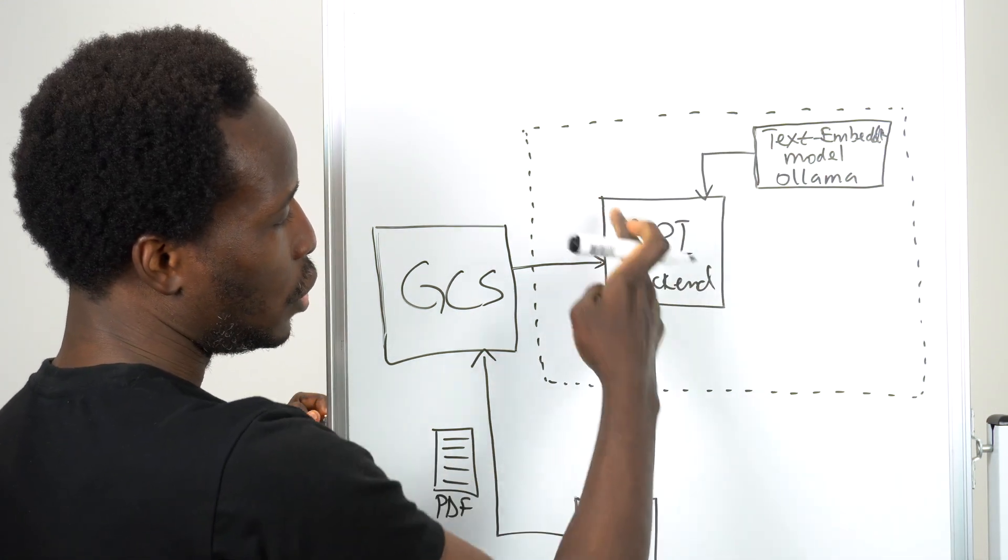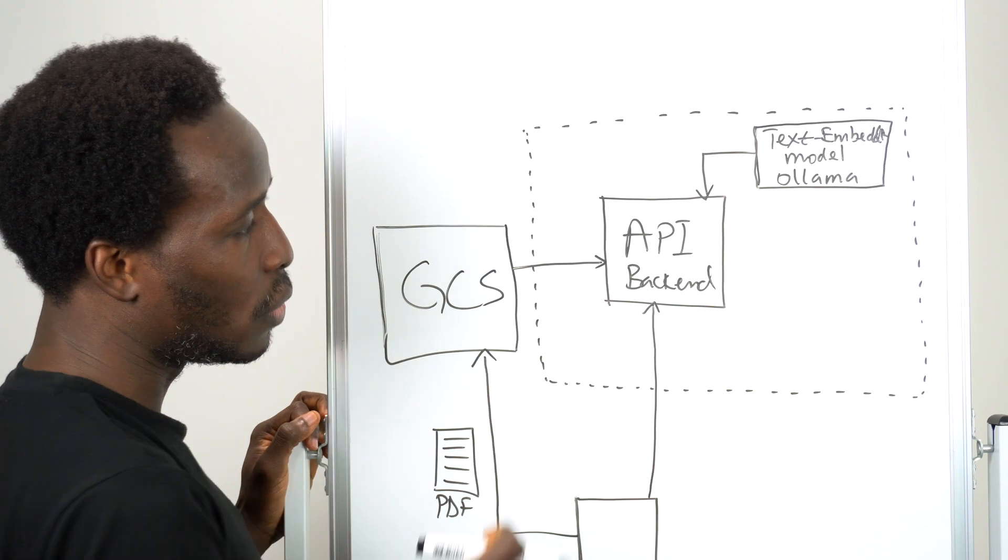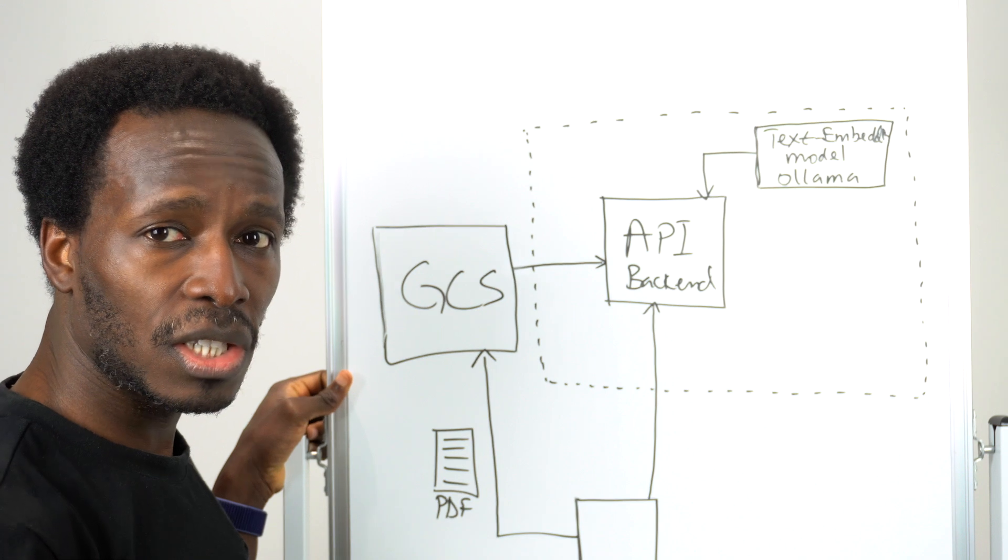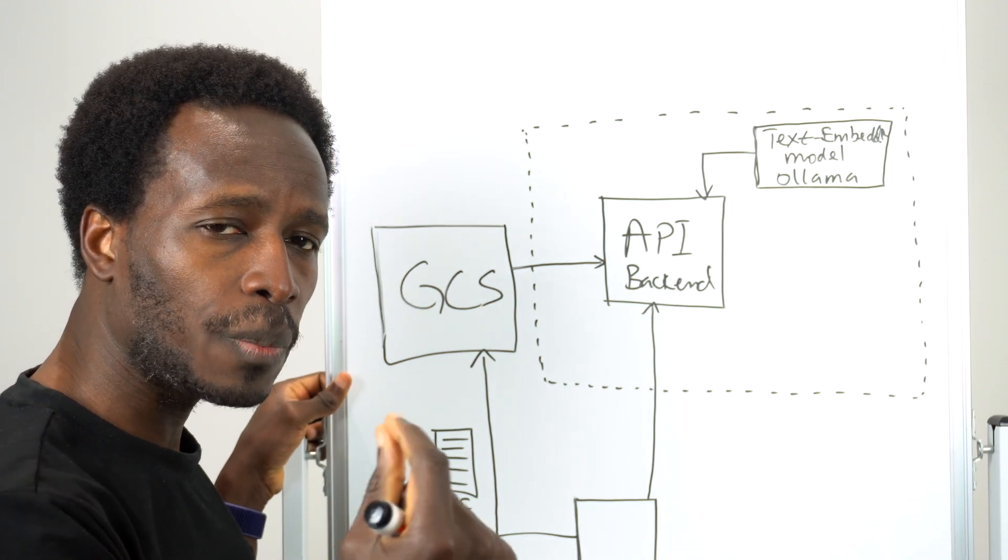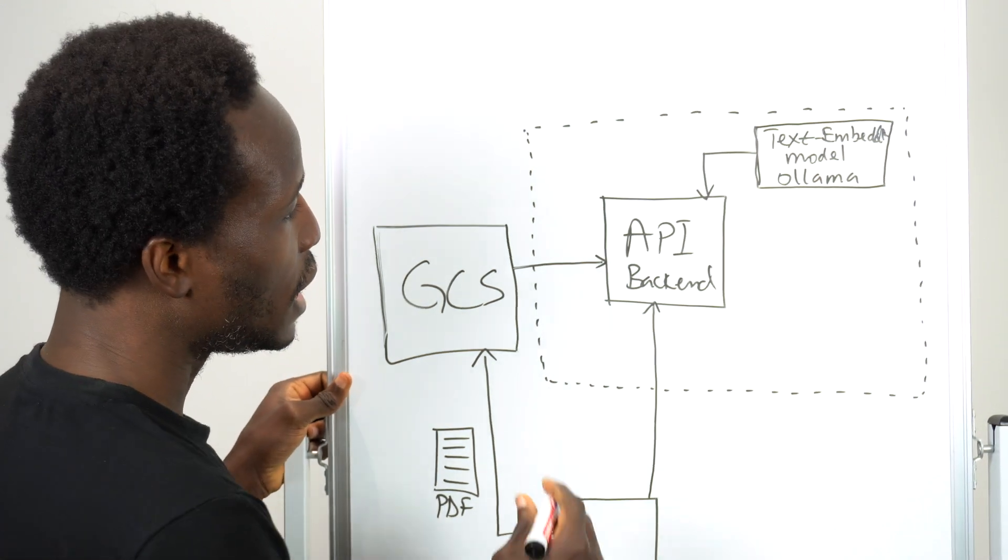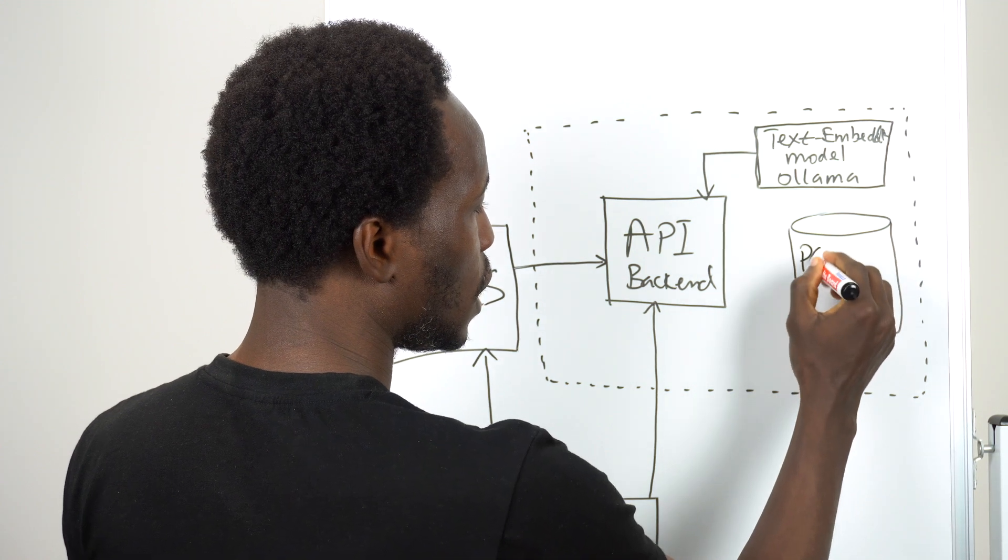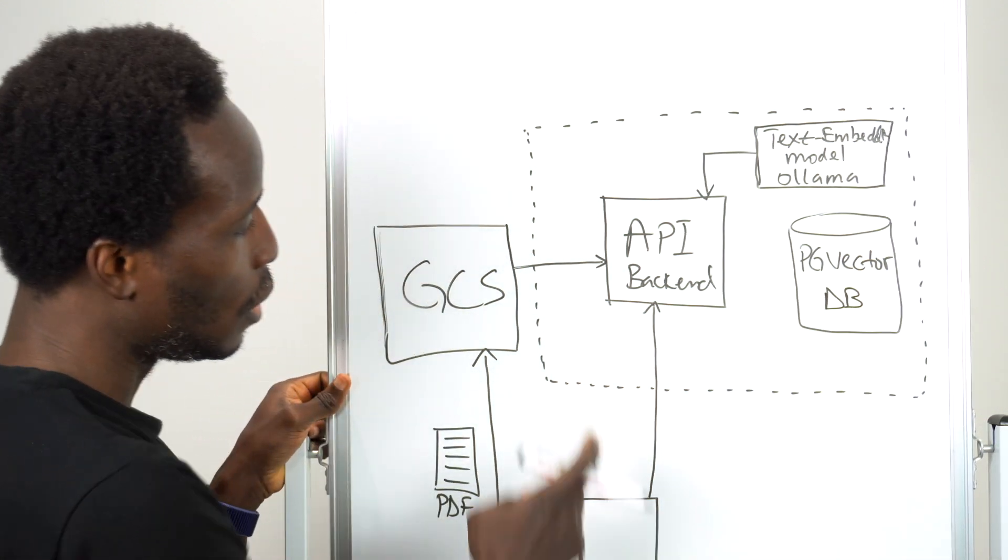Now, we use the text embedding to generate the embeddings. Once we have those embeddings, we need to store them in a database. And in this case, it's not just any kind of database. We need a vector database. And a good example here would be PG vector, which is a variant of Postgres. So we have PG vector, and this is our DB. So document is uploaded, we fetch the document, we process it, and generate the embeddings, and then we store the embeddings in our database.